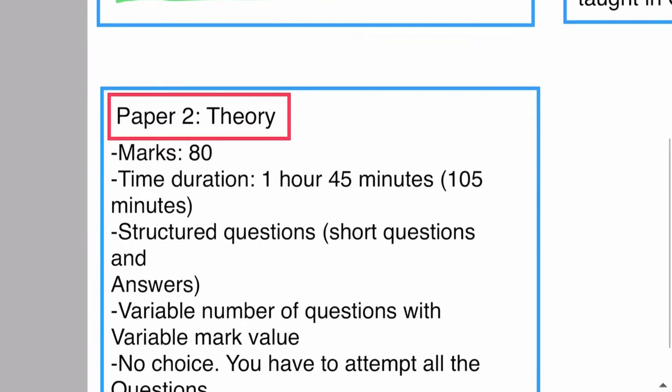Paper 2 is the theory paper, which contains structured questions—short questions and answers. There are a variable number of questions in Paper 2 with variable mark value. For example, there can be 7, 8, or 9 questions.